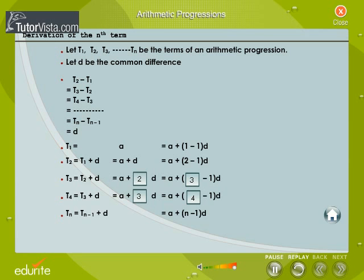Following the same pattern we get the nth term tn is equal to the n minus 1th term that is tn minus 1 plus d. That is equal to a plus n minus 1 into d.